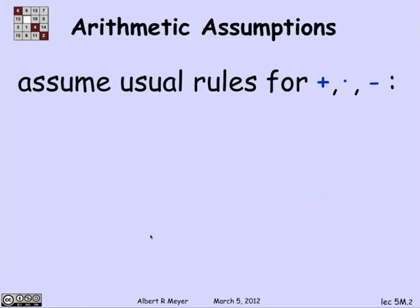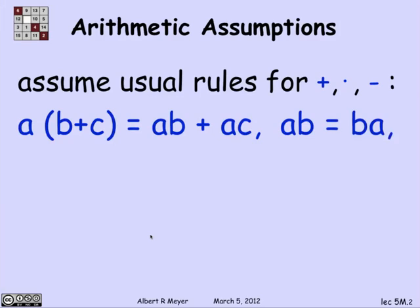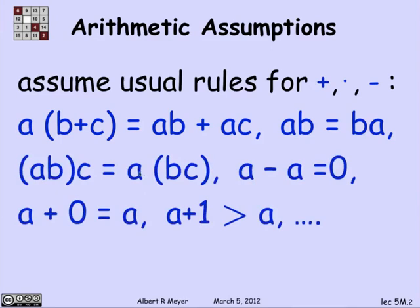Let's begin by stating the rules of the game. We're going to assume all of the usual algebraic rules for addition, multiplication, and subtraction. Some of these rules have names: the first is distributivity of multiplication over addition, the second is commutativity of multiplication, then associativity of multiplication, the additive identity (A plus 0 equals A), and the additive inverse (A minus A equals 0). A plus 1 is greater than A. These are all standard algebraic facts we take for granted.